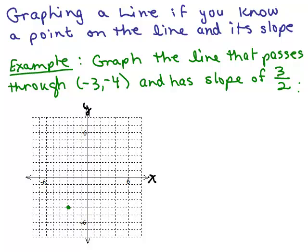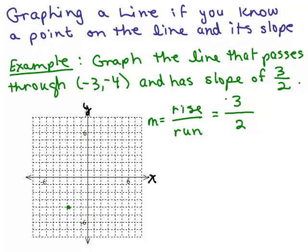Now we're going to use the idea of slope and rise over run to find another point. The slope is rise over run. The trick is to write the slope as a fraction — it's 3 halves. We want signs in the numerator and denominator so it stays positive 3 halves: plus 3 over plus 2. A run of positive 2 and a rise of positive 3 gives us another point on the line.